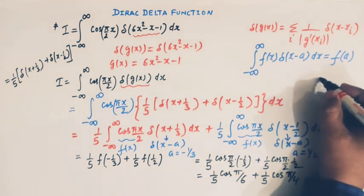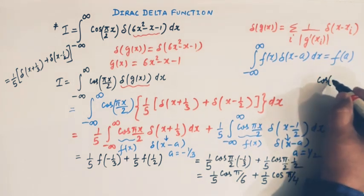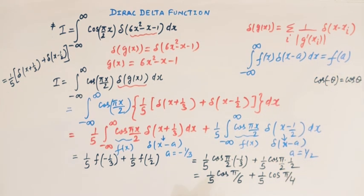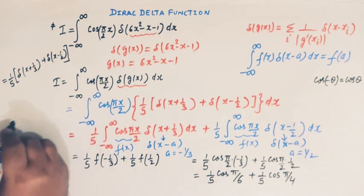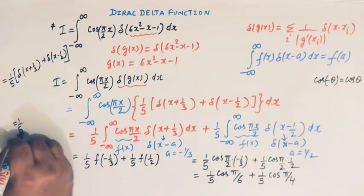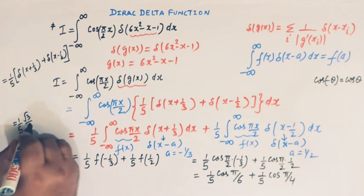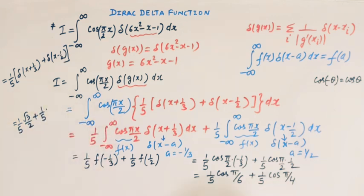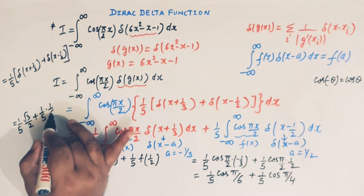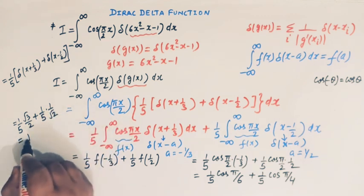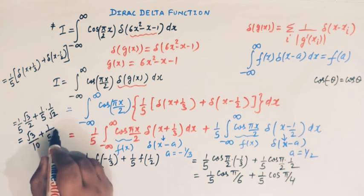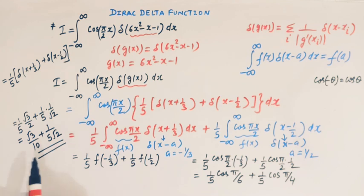Using the identity cos(minus theta) equals cos(theta), cos(π/6) equals root 3 over 2 and cos(π/4) equals 1 over root 2. Therefore the final answer is root 3 over 10 plus 1 over 5 root 2.